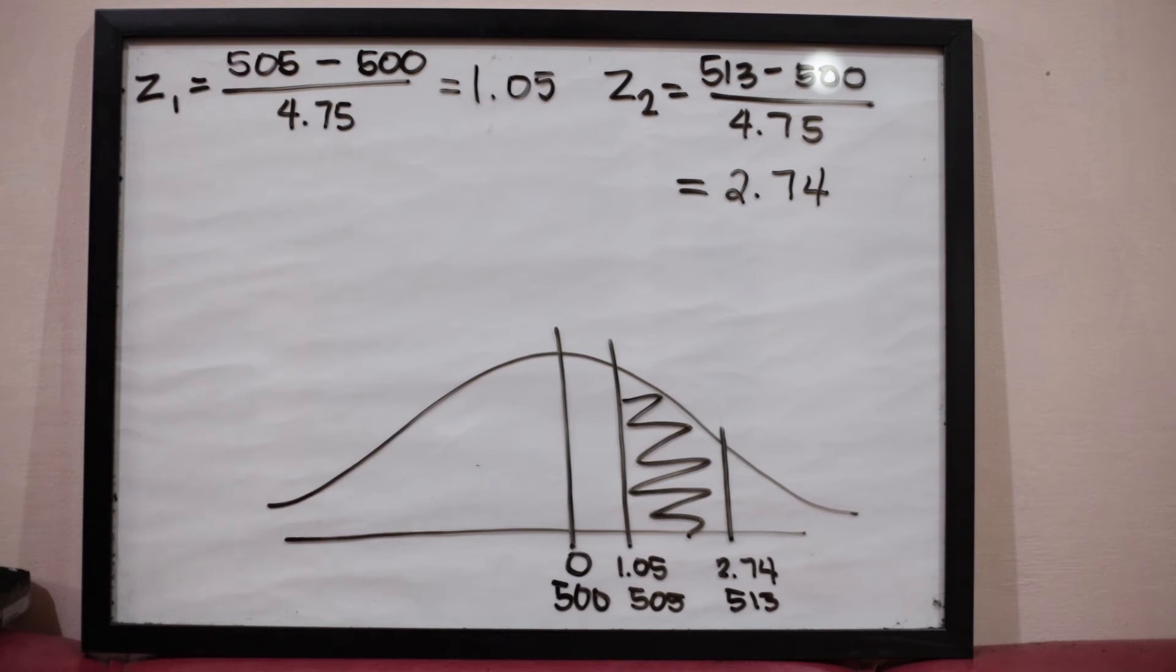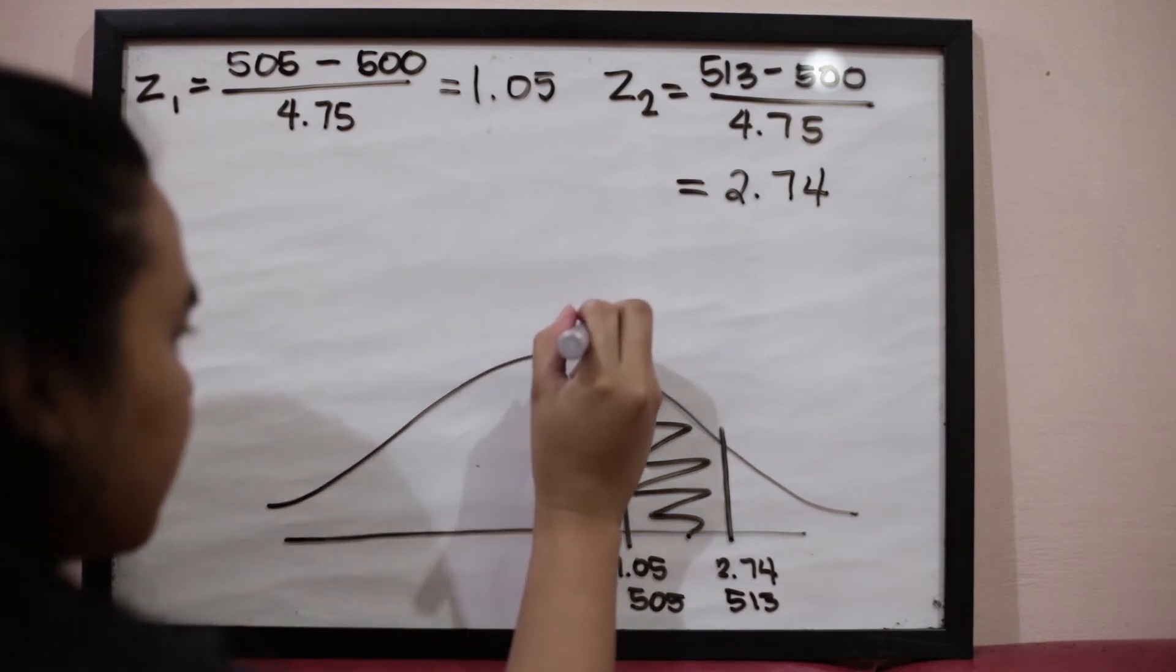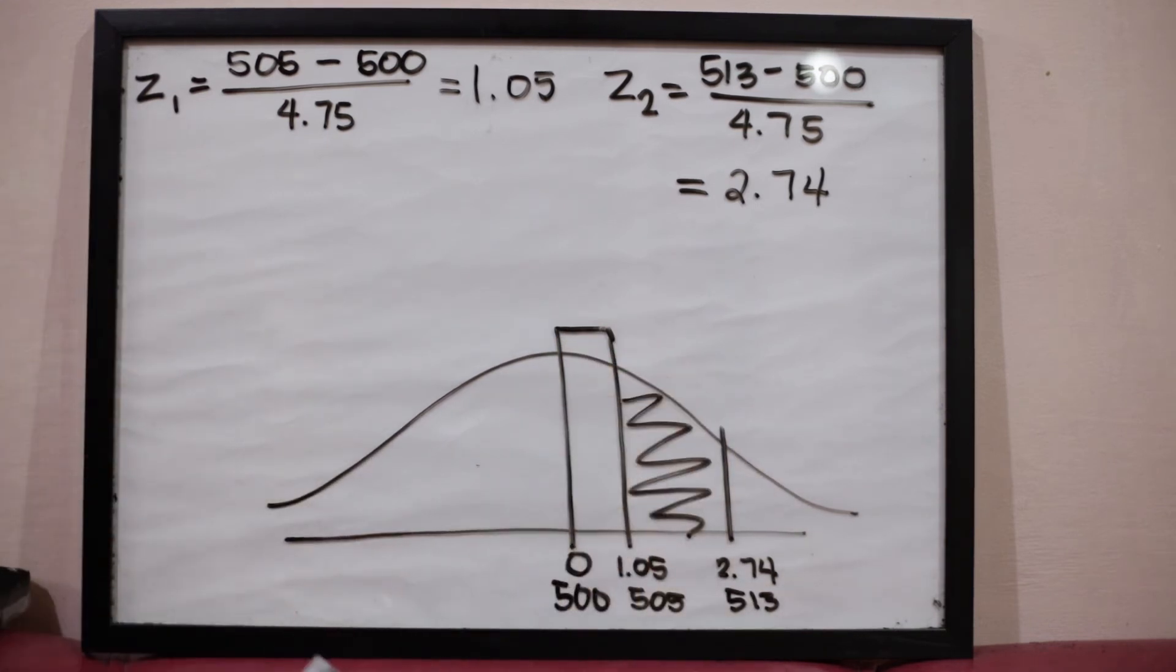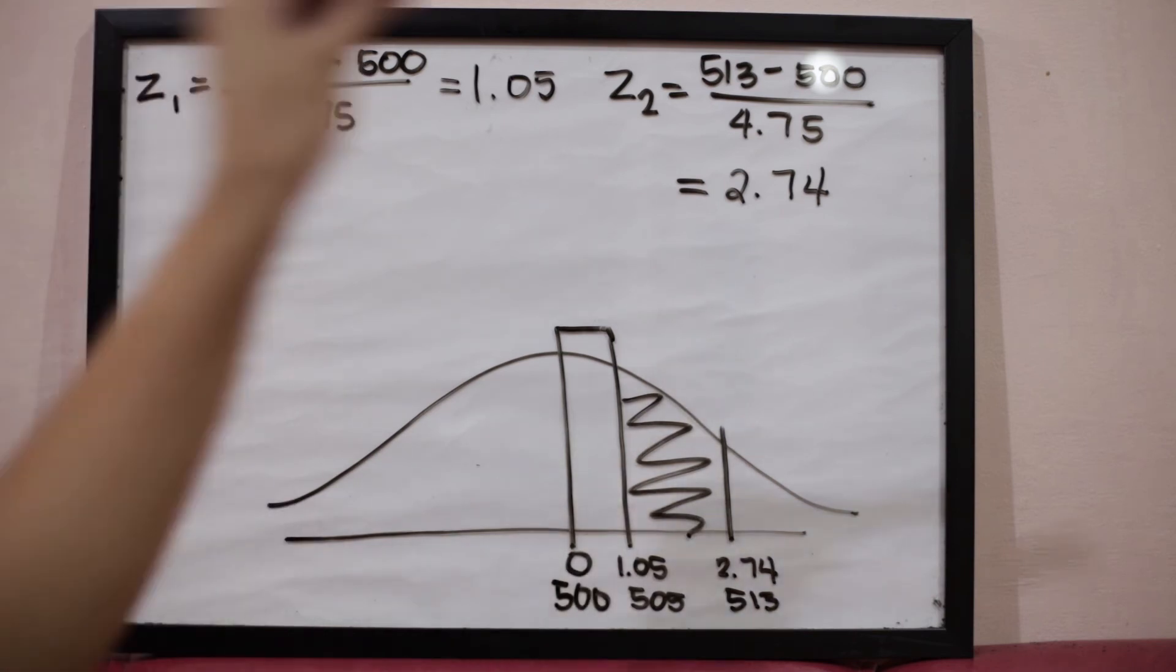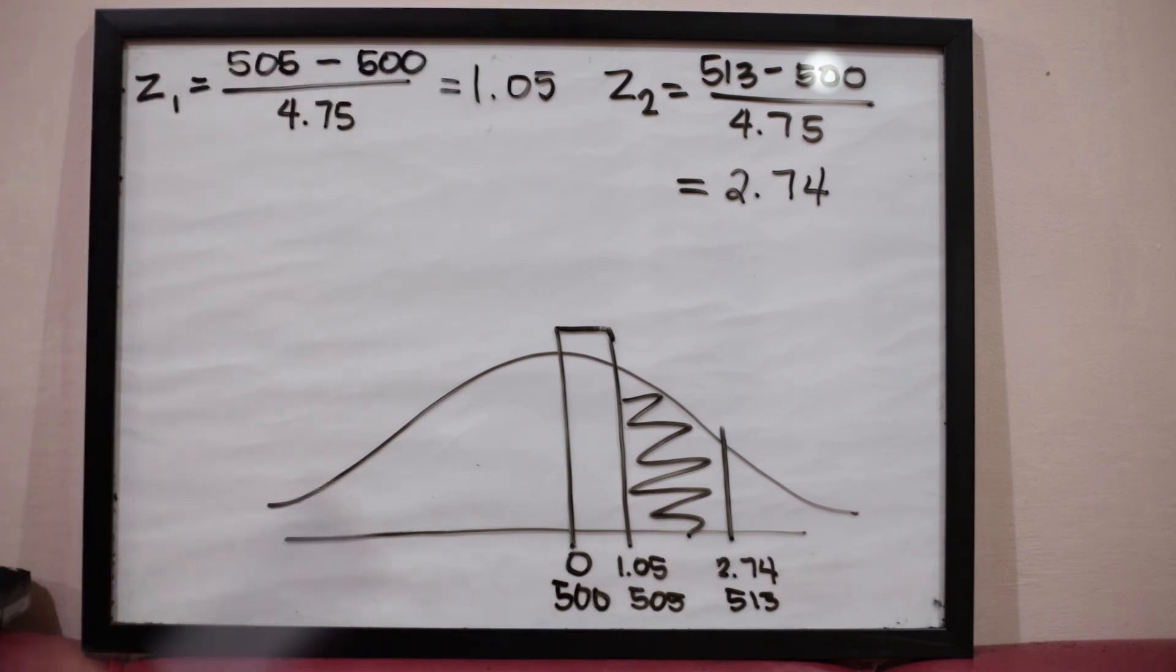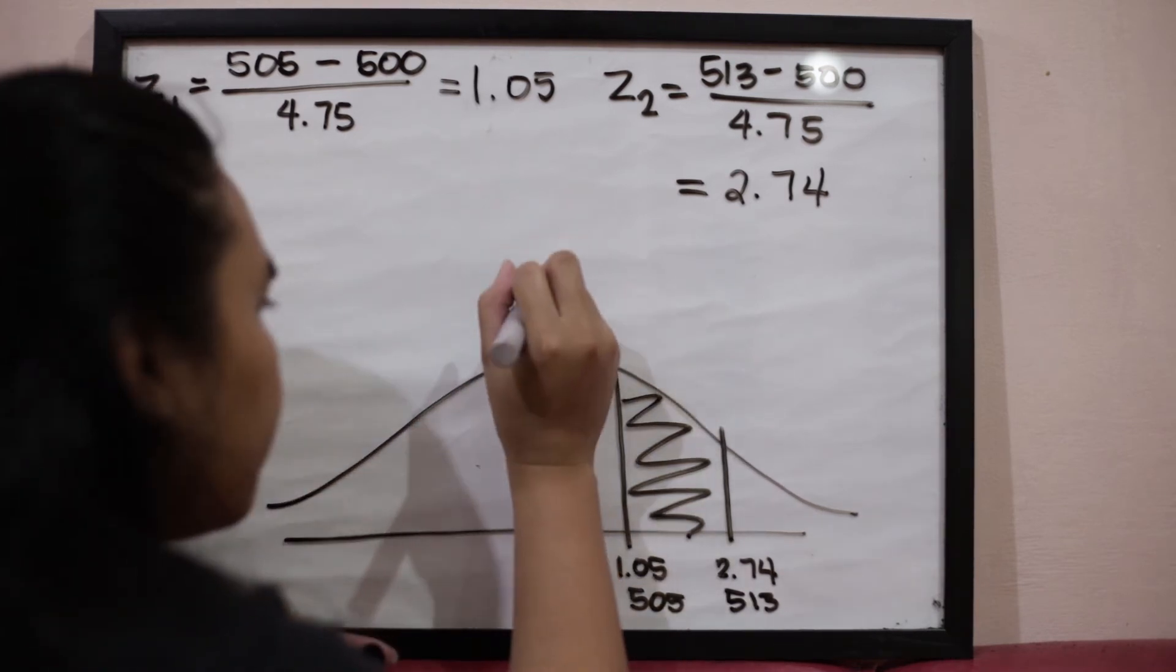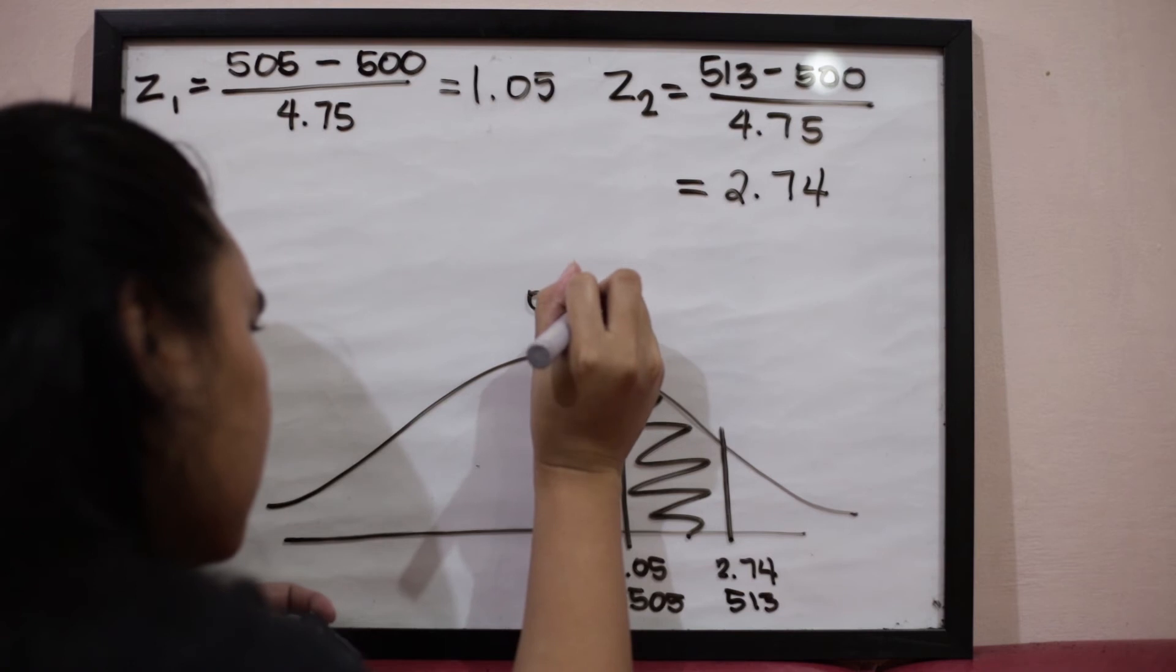The shaded region for that is the region between 505 and 513. After getting the shaded region, we now go to the table to get the area from the mean up to the given z-score. For the first z-score 1.05, zero to 1.05, what is the area? The area reflected by the table is always from zero up to the given z-score. You have to look at 1.0 for the first column and 0.05 for the first row. That is 0.3531.